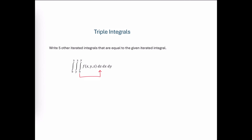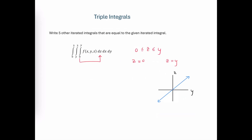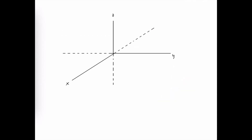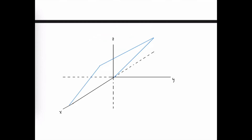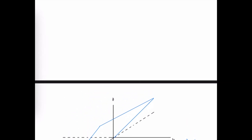Let's start with the inside iteration. Integrating with respect to z and having those limits go from 0 to y means the lowest value of z is 0 and the highest value of z is y. We're hitting z equals 0, which is the xy plane at the lower limit, and z equals y, which is another plane at the top. So we'll start by graphing the plane z equals y. Since we're missing the x variable, we graph it in the yz plane — it's a line with slope 1 through the origin, extended in the direction of x.